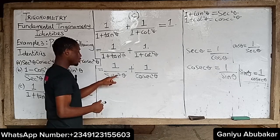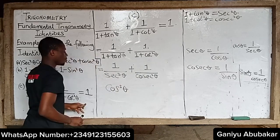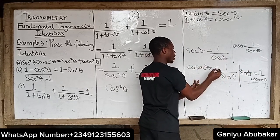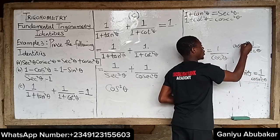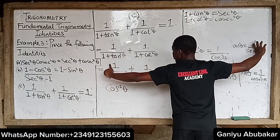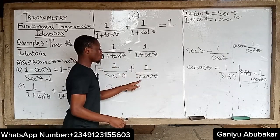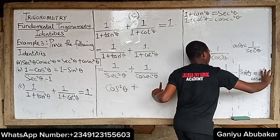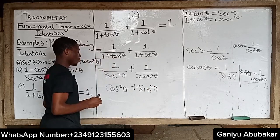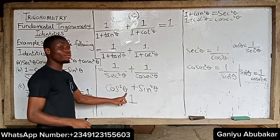So one over sec squared theta becomes cos squared theta, and one over cosec squared theta becomes sin squared theta. Putting it all together, I now have cos squared theta plus sin squared theta.